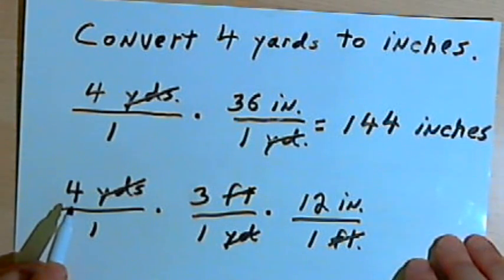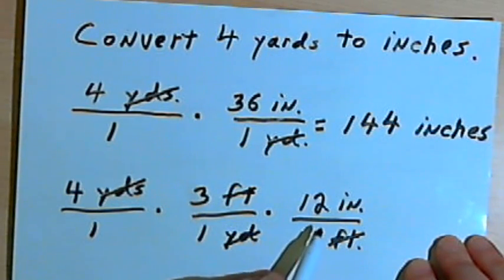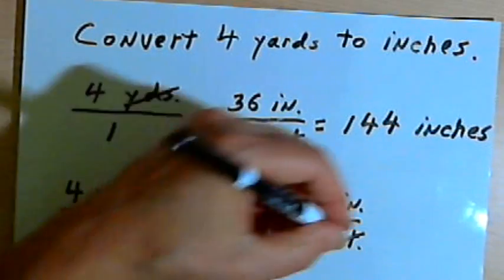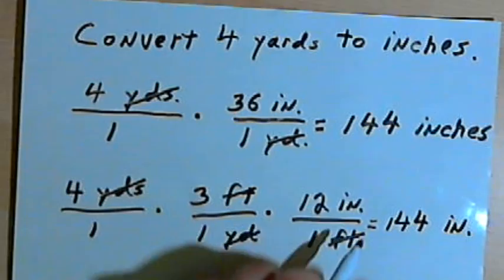I've got 4 times 3, that's 12, times 12 again is 144, and the unit of measure is inches. So that's 144 inches. That's the same thing I got the first time around.